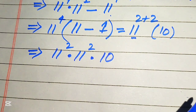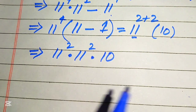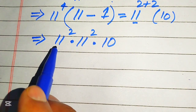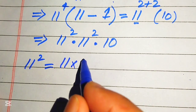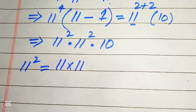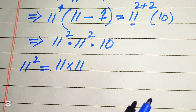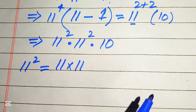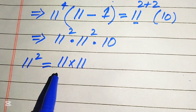Our next target is to find the square of 11 and multiply both of these values. Some students cannot do this type of multiplication directly, but some students already know the square of 11. If you directly know the square of 11 you can just put the value, but for those students who may not know it, I will write out these steps.